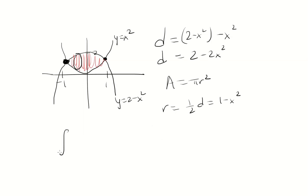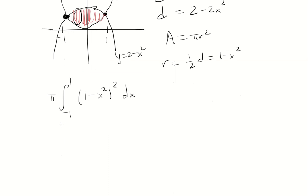So now we integrate. We're going from negative 1 to 1, pi r squared. So factor out the pi, and then r is just 1 minus x squared. So we're going to square that. And now we're going to expand this. So we have 1 minus 2x squared plus x to the fourth dx, going from negative 1 to 1.